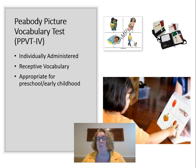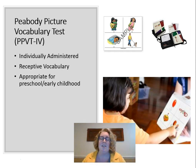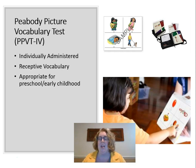The PPVT measures receptive vocabulary — what words a student understands. It's commonly given to young children in early childhood and preschool, and also to English language learners before they can produce words. There's a complementary Expressive Vocabulary Test where only one picture is shown and the student must say the word aloud — measuring the ability to produce vocabulary. Typically, receptive vocabulary develops first, followed by expressive vocabulary.